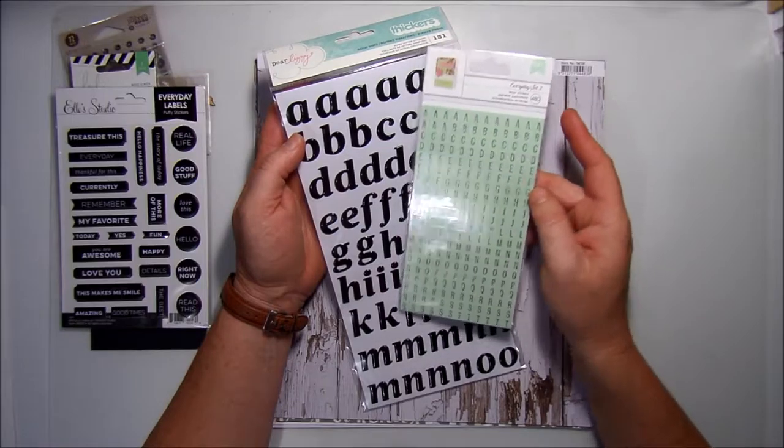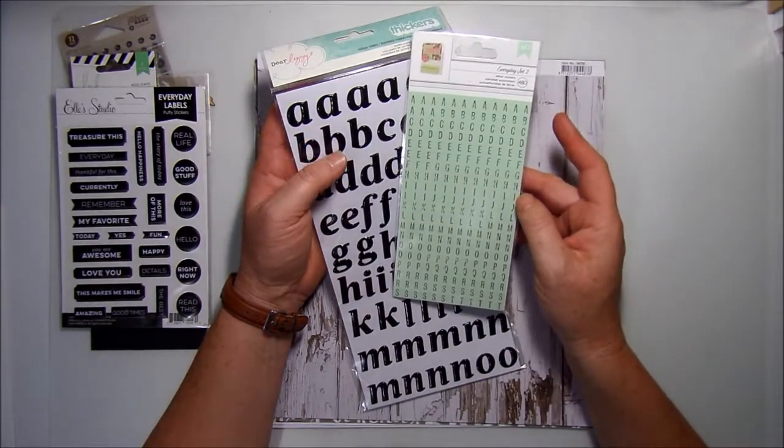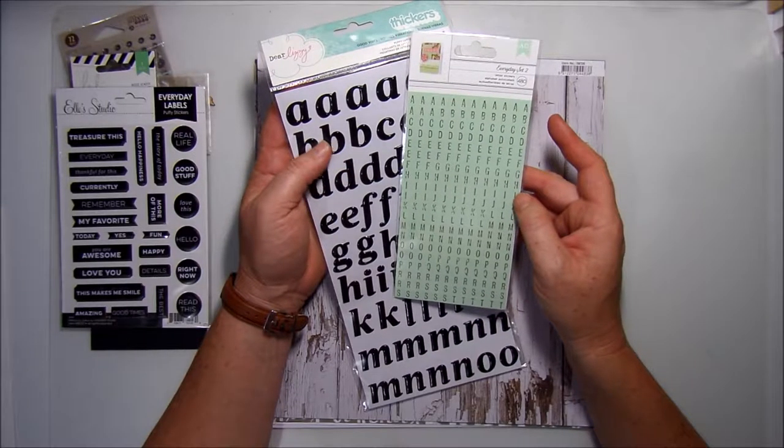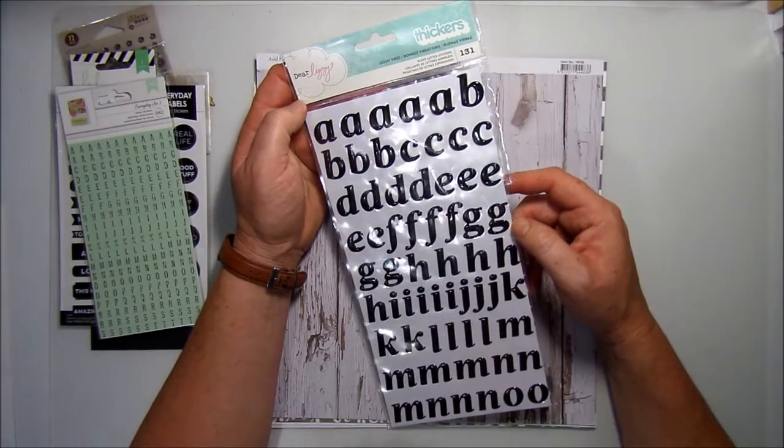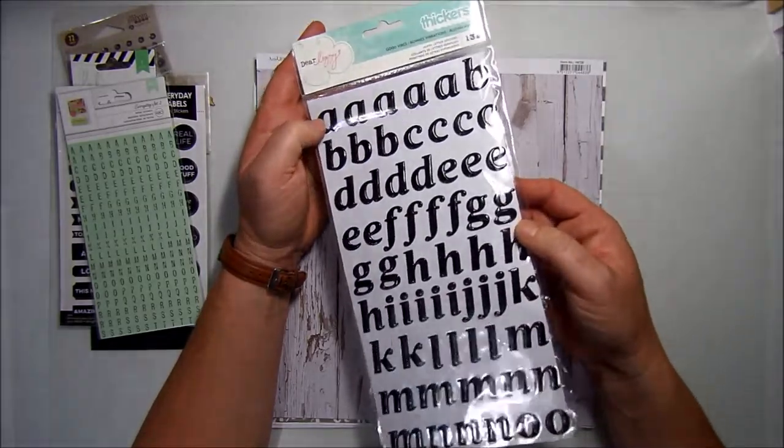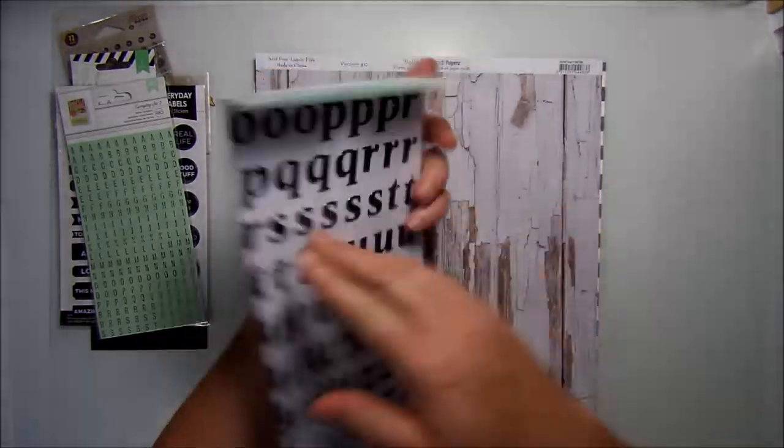There are two sets of alphas in the kit. We have everyday set 2 by American Crafts, a really nice green sort of like a pastely mint green which is great. We also have the Dear Lizzie Thickers, these are called good vibe and they're also a puffy sticker in the black. Lots of titling there.